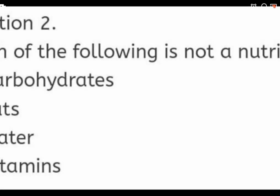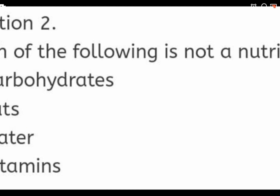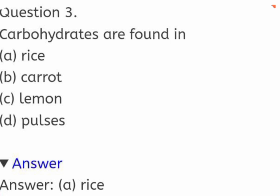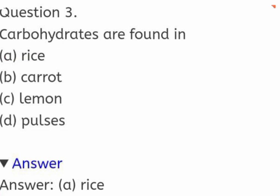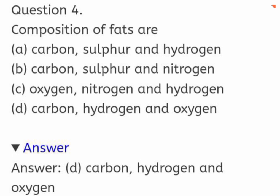Which of the following is not a nutrient? Options: carbohydrates, fats, water, or vitamins. The correct answer is water. Carbohydrates are found in: rice, carrot, lemon, or pulses. The correct answer is rice. Composition of fats: (A) carbon, sulfur and hydrogen; (B) carbon, sulfur and nitrogen; (C) oxygen, nitrogen and hydrogen; (D) carbon, hydrogen and oxygen. The correct answer is carbon, hydrogen and oxygen.